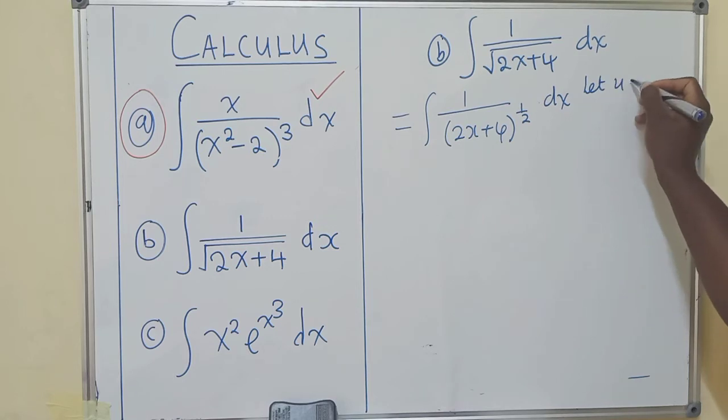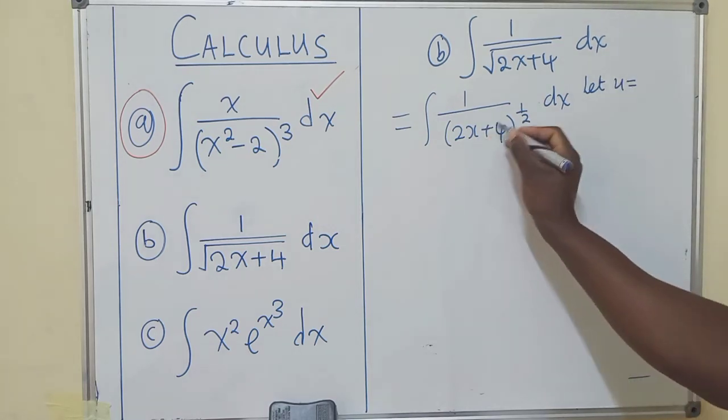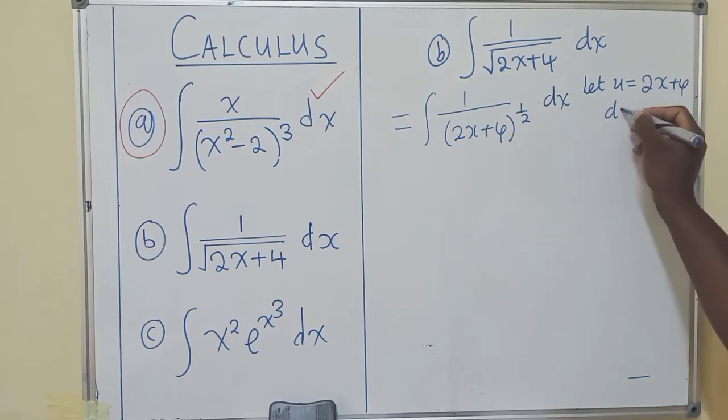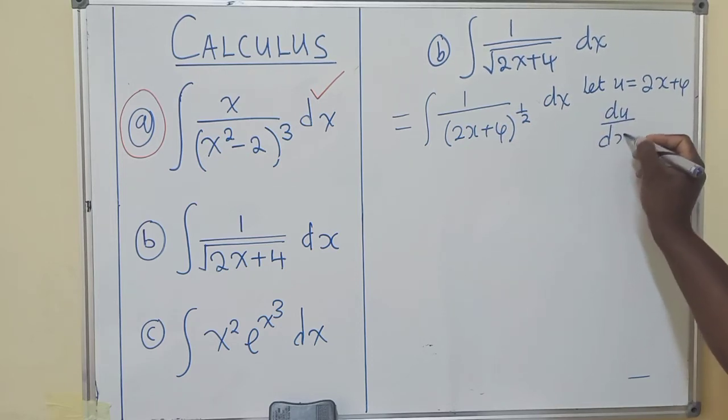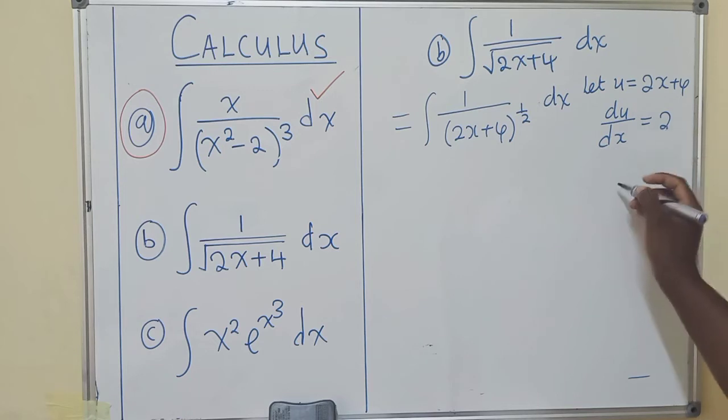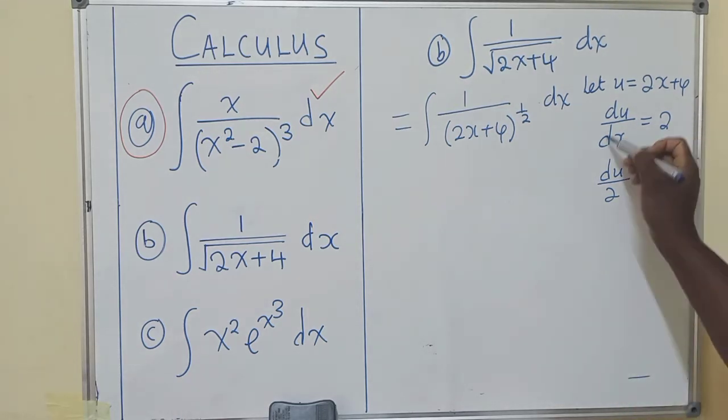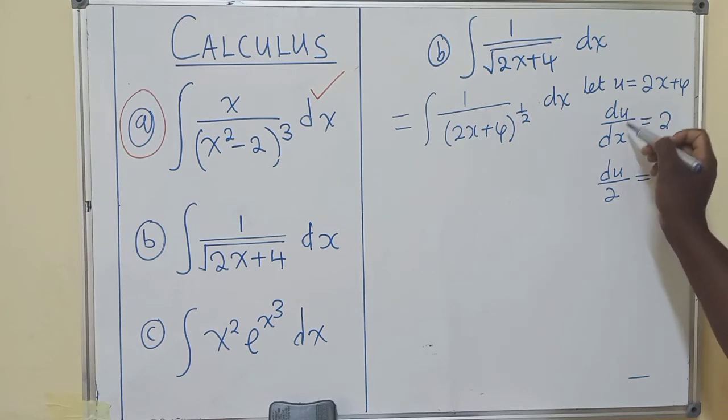Let u be equal to 2x plus 4. du/dx is equal to 2. So here, du over 2 will be equal to dx. We make dx the subject of the formula.